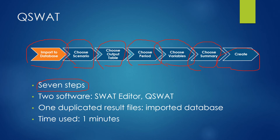In this process, you need two softwares: the SWOT editor to run the model and import output to a database, and QSWOT for visualization. Although SWOT editor is sometimes considered part of QSWOT, it is effectively separate software. In terms of duplicate result files, because we used the import-to-database function, you still get a duplicate database file. The total time for this process was one minute — half the time of ArcSWOT, but still long if you need to do many similar analyses.